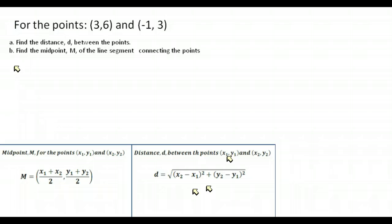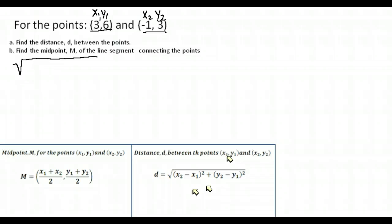Let's start with example A. Our two points are (3, 6) and (-1, 3). We can call (3, 6) our x1, y1 and (-1, 3) our x2, y2 — it doesn't matter which is which; you'll get the same answer either way. We take the square root of the x values subtracted: negative one minus three.